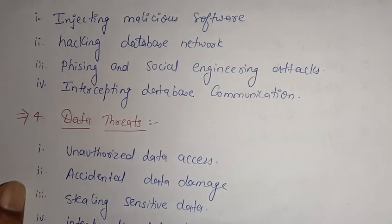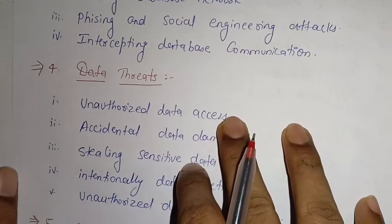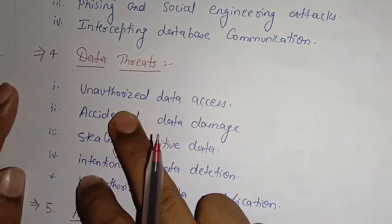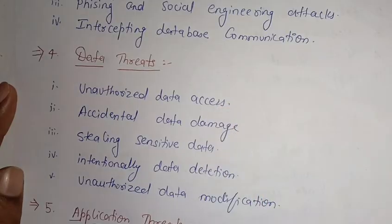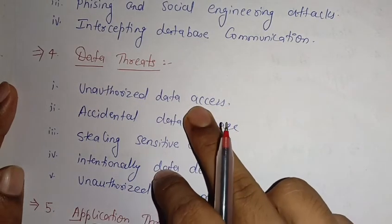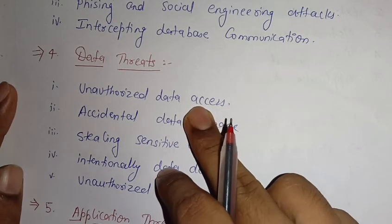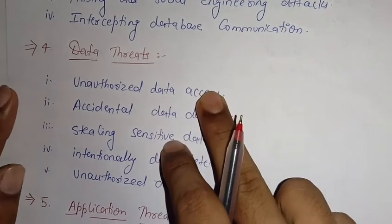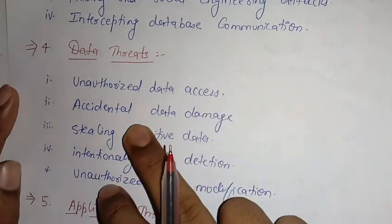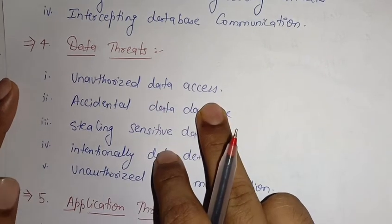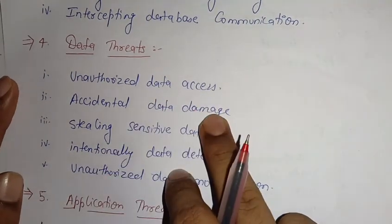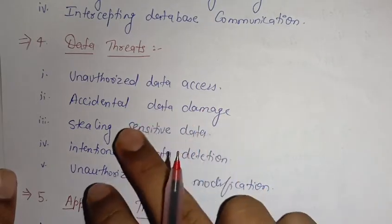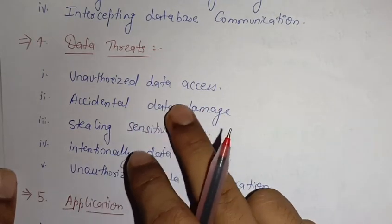The fourth threat is data threat. The first type is unauthorized data access — a person who does not have access to particular data tries to get that data through unauthorized means. The second is accidental data damage — when a person is not trying to damage the data but through certain functions and codes that data may be damaged, this is considered a data threat.